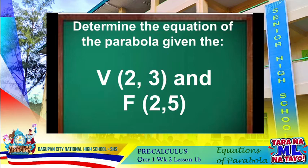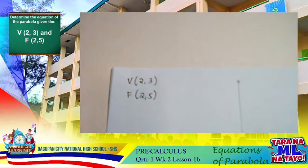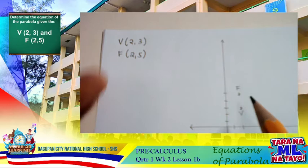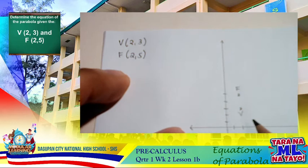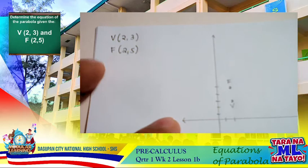If you are going to plot or graph these coordinates to see the relationship of the given vertex and the focus, we have here the Cartesian plane. We are going to plot the vertex at 2, 3 - 2 units to the right, then 3 units upward. There you have the vertex. And the focus at 2 units to the right and 5 units upward.